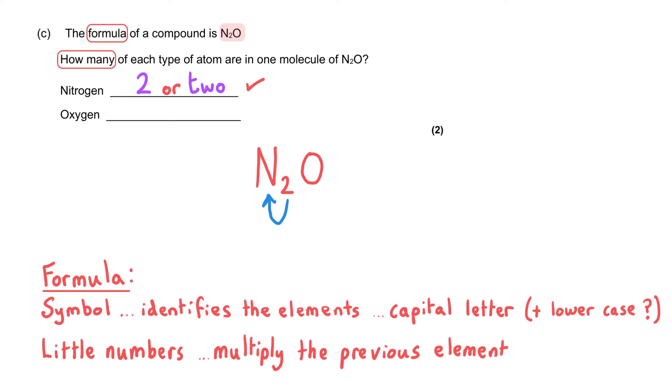And so that means we have got two atoms of nitrogen, which we can write as a digit or as the word two. And since there is no number after the capital O for oxygen, that means we only have one atom of oxygen. We don't write ones as part of a formula. If there is no number after an element symbol, that means there is one of that particular element.